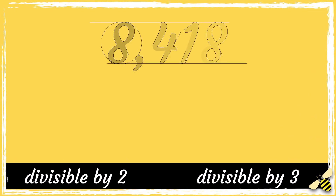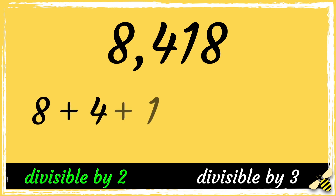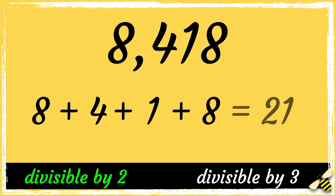Here's the number 8418. First let's see if this number is divisible by 2. 8 is an even number, so this number is divisible by 2. Now we need to see if it's divisible by 3. So let's add the digits in the number: 8 add 4 add 1 add 8 equals 21. 21 is divisible by 3. So as this number is divisible by 2 and 3, that means it is divisible by 6.